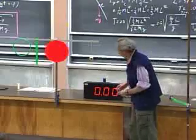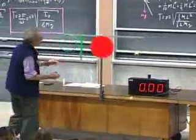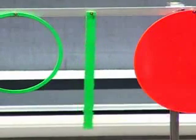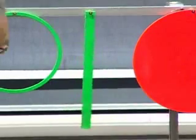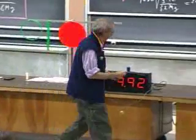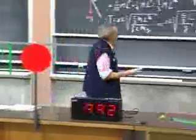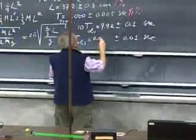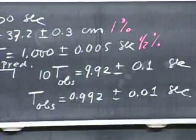Here is the rod. We offset it and count oscillations: one, two, three, four, five, six, seven, eight, nine, ten. The result is 9.92 seconds for ten oscillations, so T = 0.992 ± 0.01 seconds — well within the prediction.